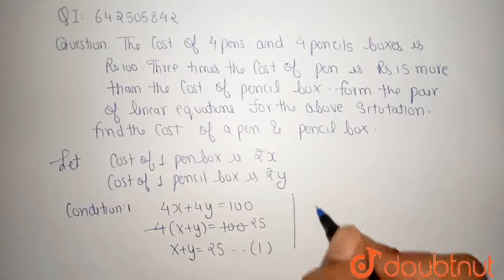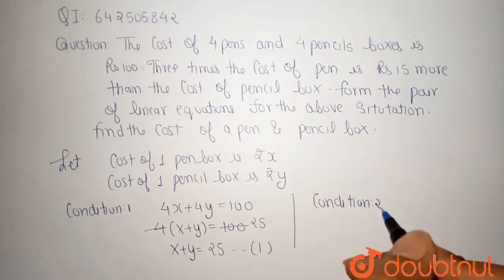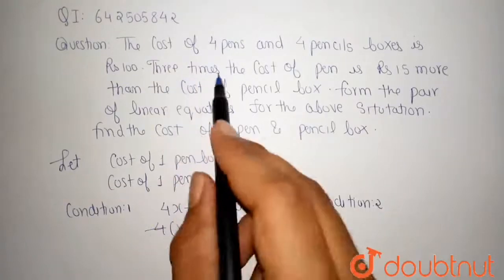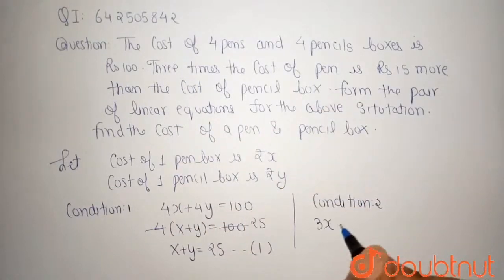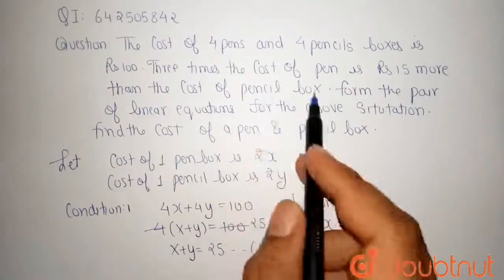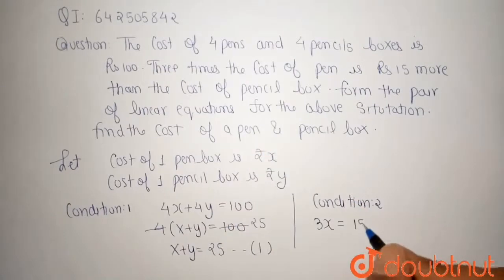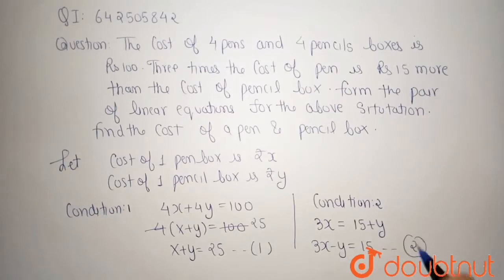Now what is our condition number second? 3 times the cost of pen, that means 3x, is equal to 15 more than the cost of pencil boxes, that means 15 plus y. So our equation is 3x minus y is equal to 15, the equation number second.